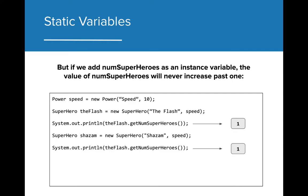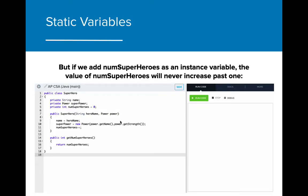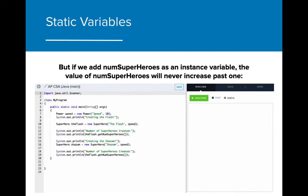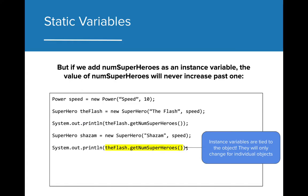The problem with using an instance variable is that the value of numSuperheroes will never increase past one. Here we see that even though we have created two superheroes, the value that is printed from getNumSuperheroes is still one. Here we can see a live demo of this. Why is it that it will always print one?